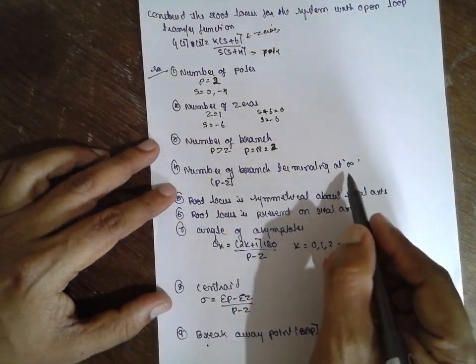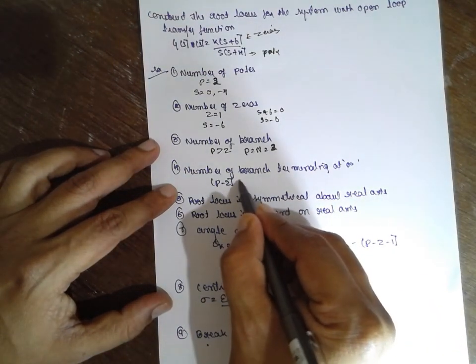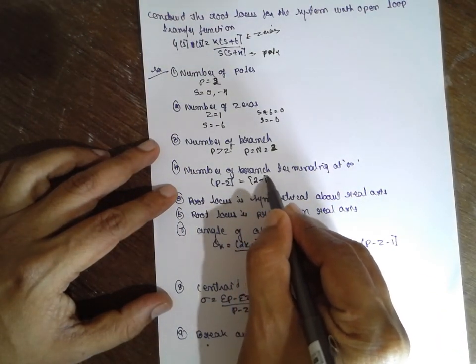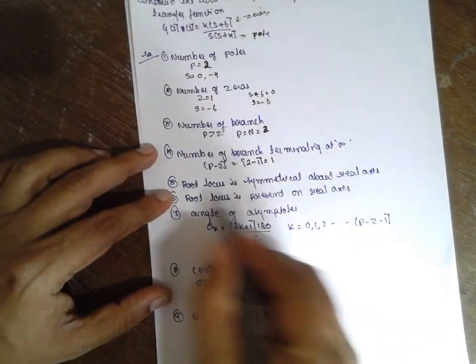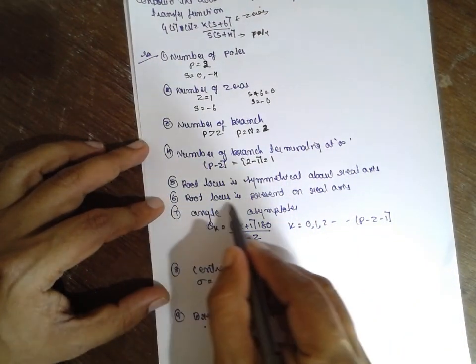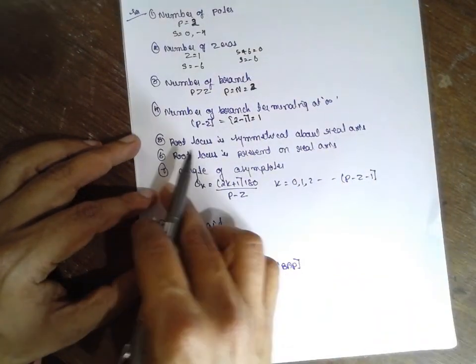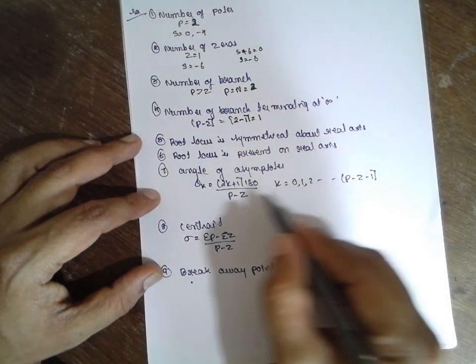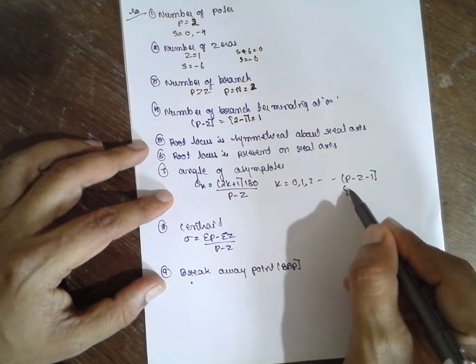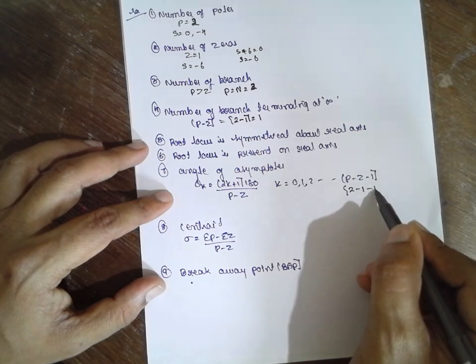Number of branches terminating at infinity will be p minus z, which is 2 minus 1 equals 1. Root locus is symmetric about the real axis. Root locus is present on the real axis. Angle of asymptotes - this is the formula where p is 2 minus 1 minus 1 equals 0. That means k equals 0.